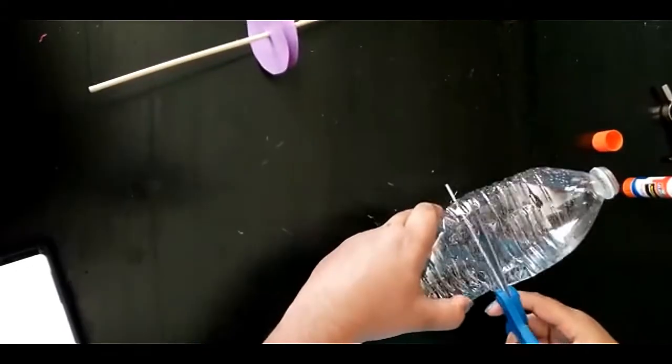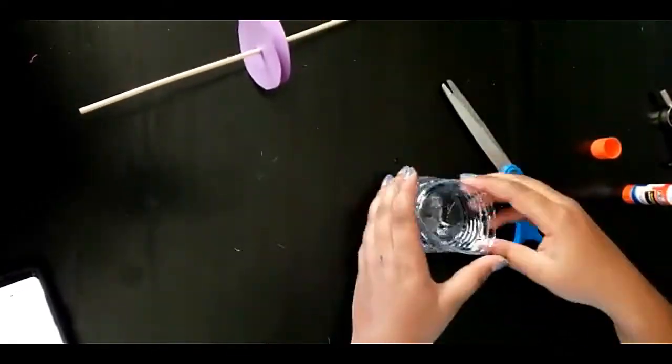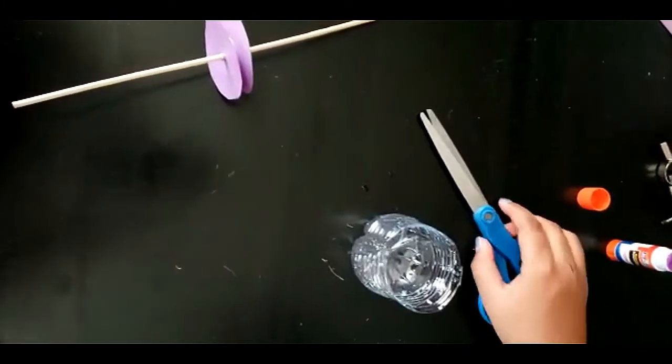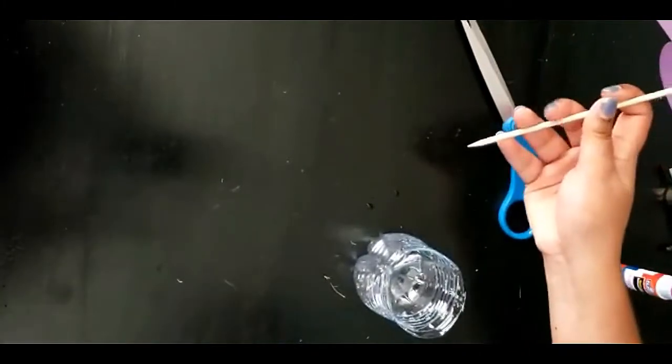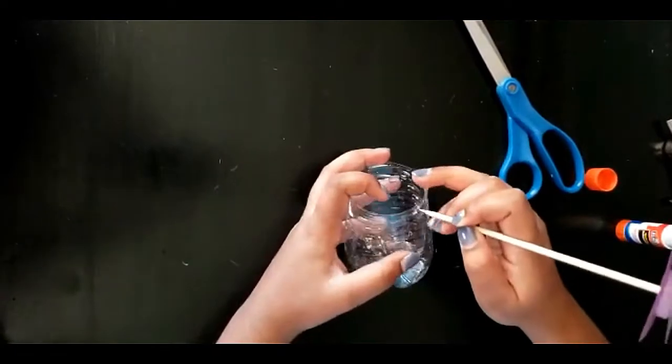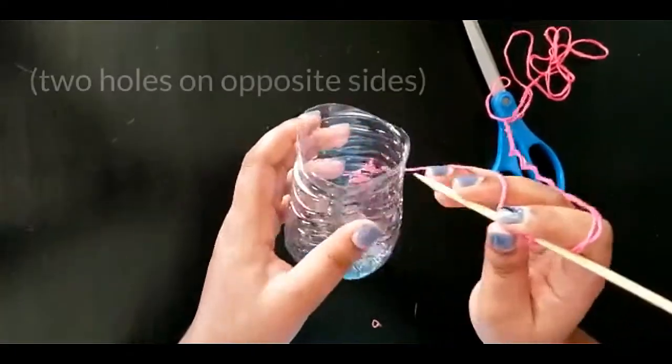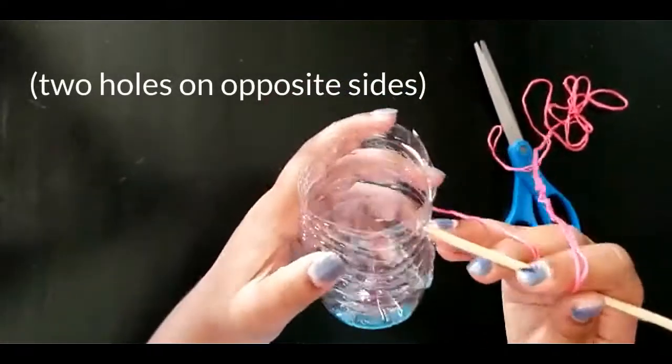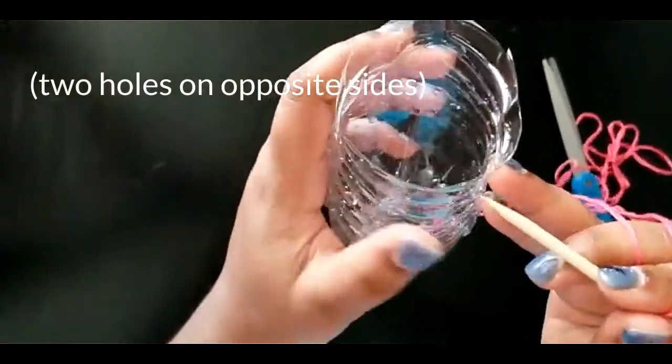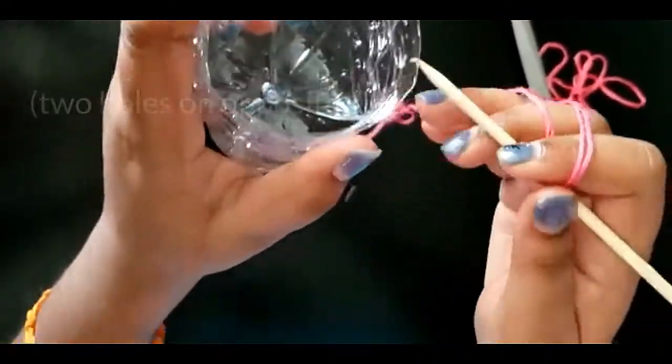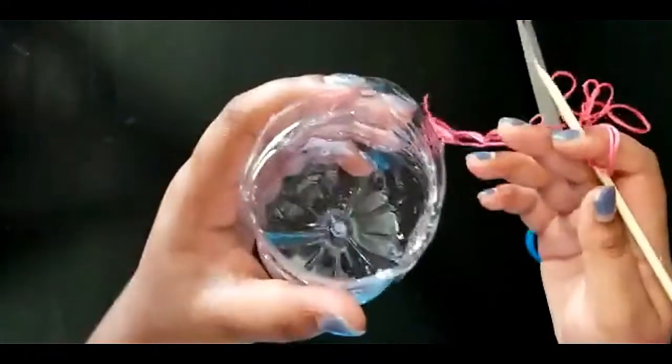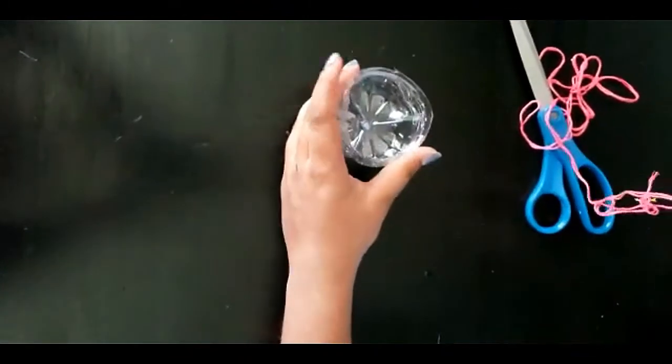Now cut the bottle in half. Take the lower half and using this skewer stick, poke two holes. Like so. Now we have two holes directly across from each other.